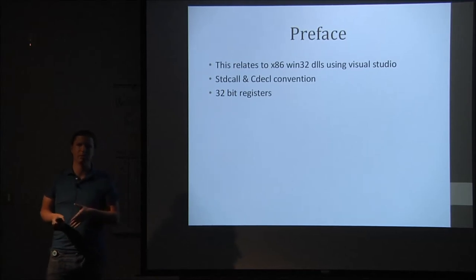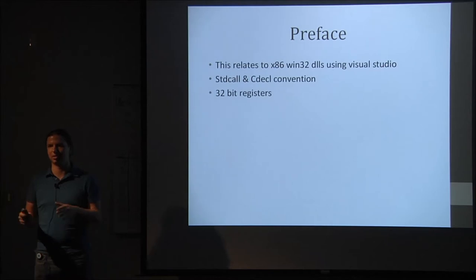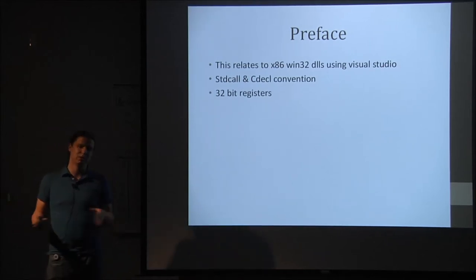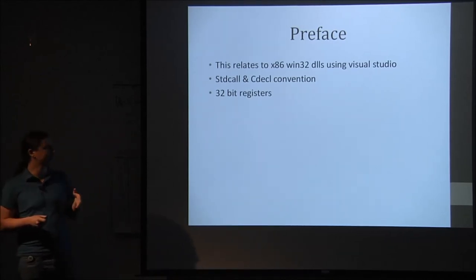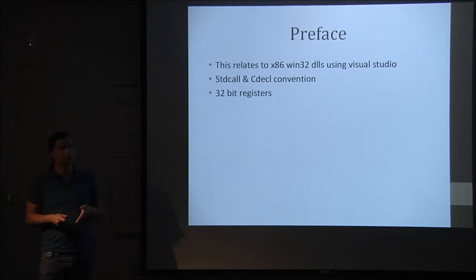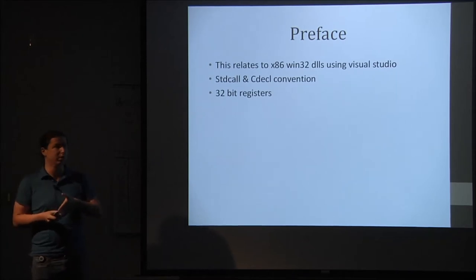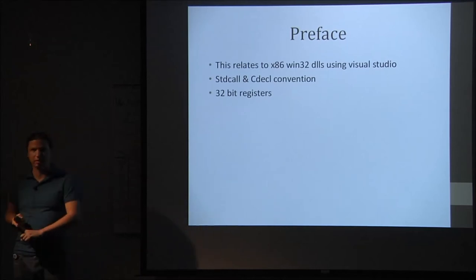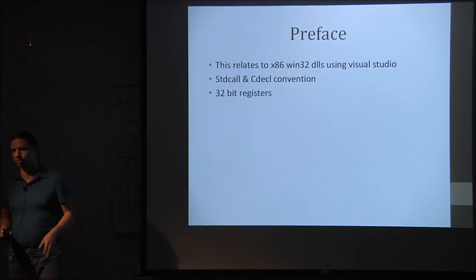A preface about my project: this is actually outside the realm of the C++ standard, so you get into the compiler, the project, and 32-bit vs. 64-bit specifics. This was all done in x86 assembly, using registers, Win32 DLLs, all in Visual Studio 2012. Everything is in stdcall — I didn't run into anything requiring cdecl. It's all 32-bit registers; no floating point or fancy registers.